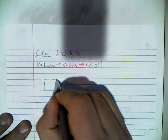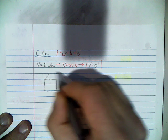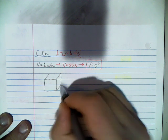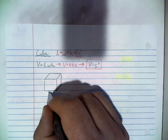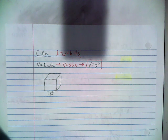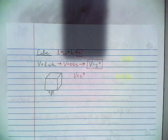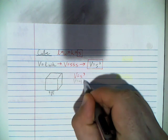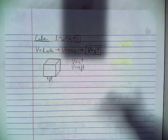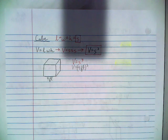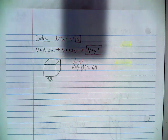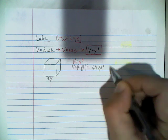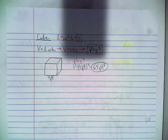I draw a cube and label one side as 4 feet since all side lengths are equal. To find its volume, we use V equals S cubed. S is 4 feet, so we write V equals (4 feet) cubed, meaning 4 feet times 4 feet times 4 feet. Four times four is 16, times four again is 64. Feet times feet times feet is cubic feet. So this cube has a volume of 64 cubic feet.